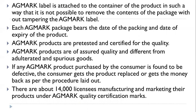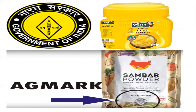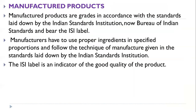This is the picture of the AGMARK label — one product shown is ghee and another is powder. Now, in the case of manufactured products, they are graded in accordance with standards laid down by the Indian Standard Institution, now the Bureau of Indian Standards, and bear the ISI label.